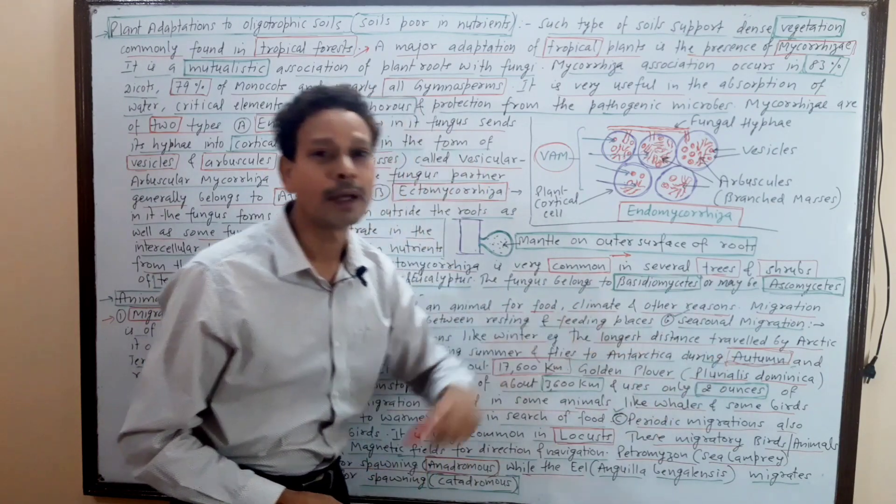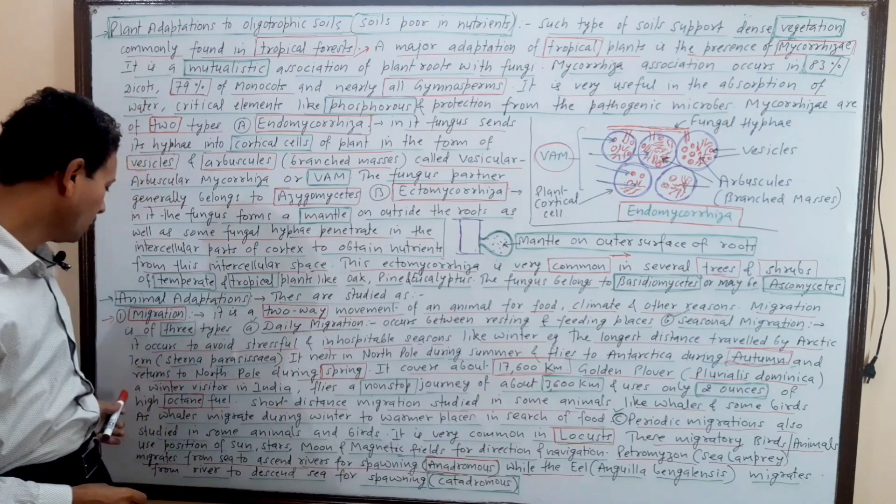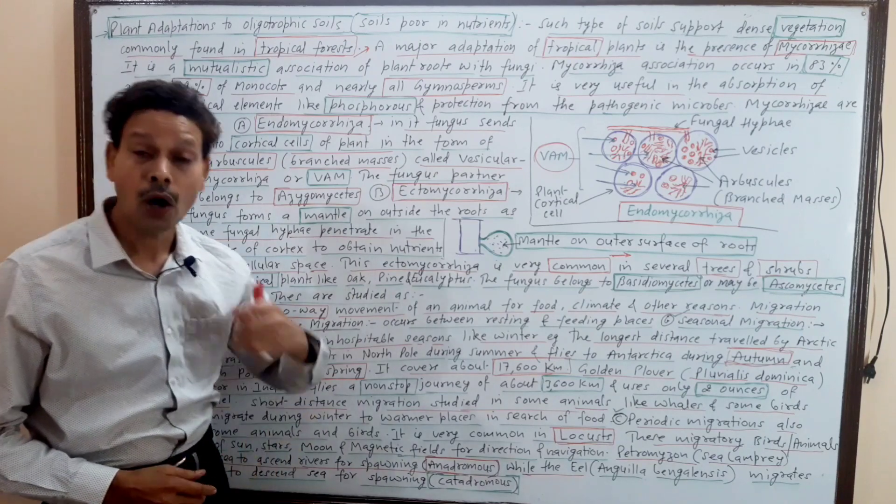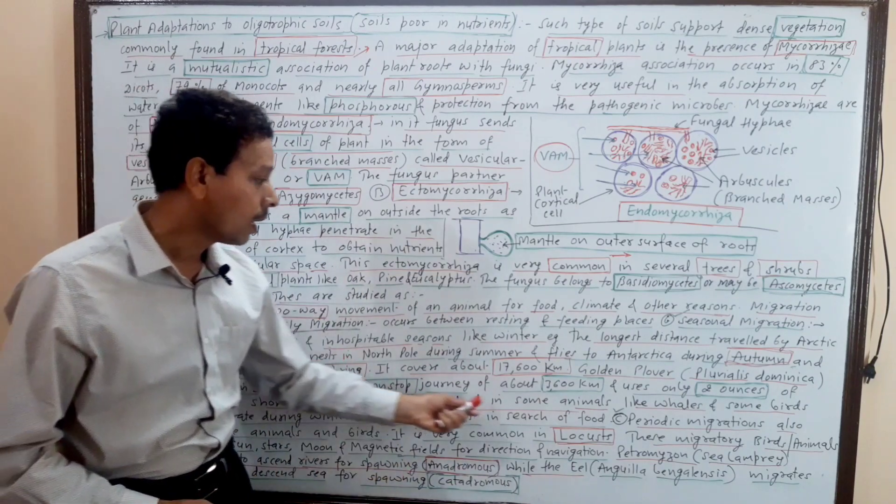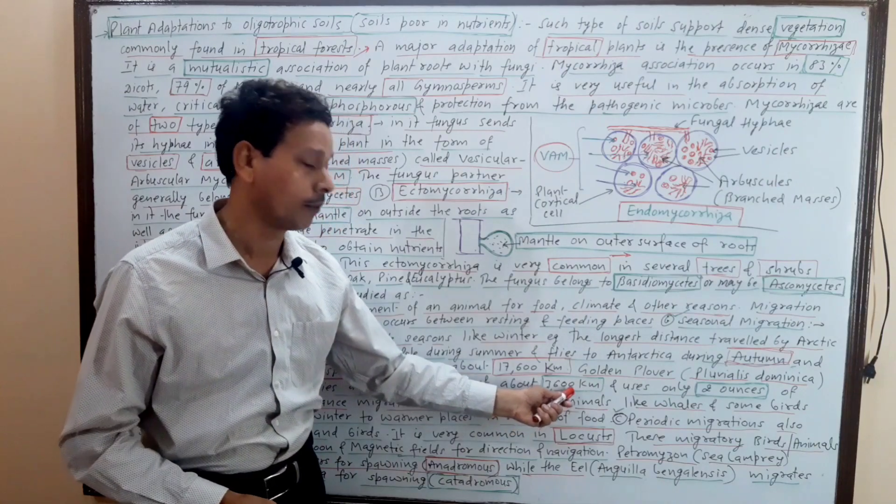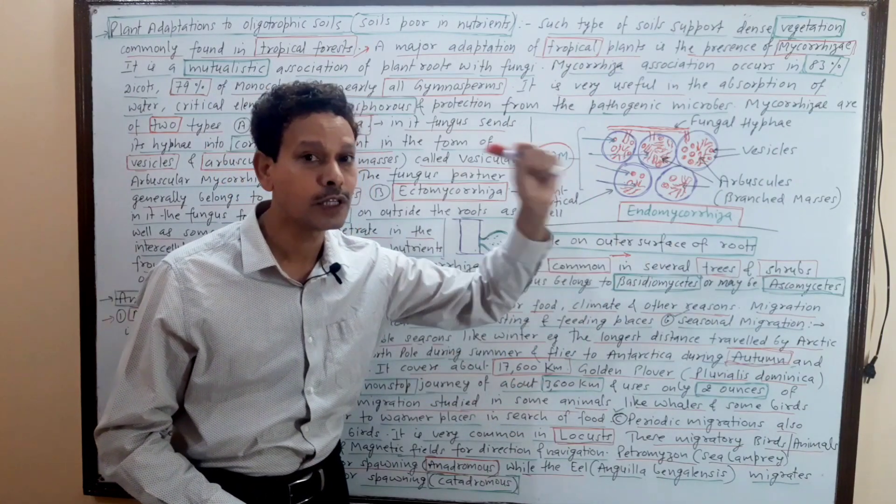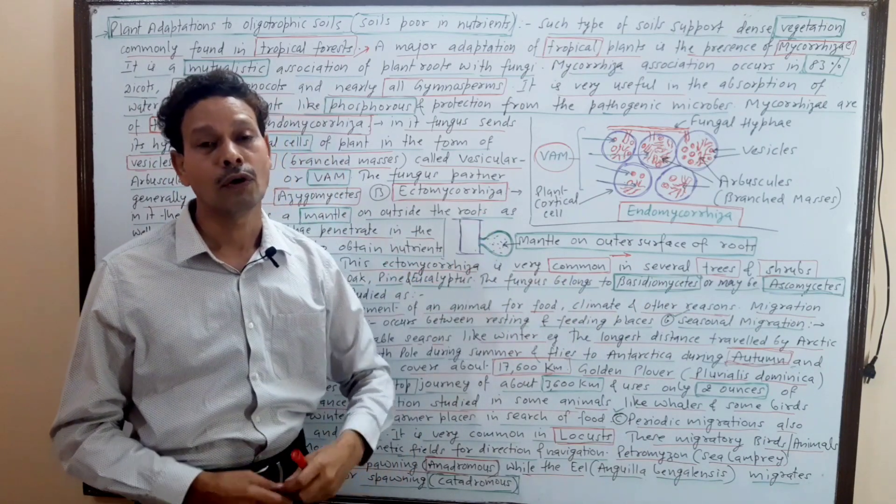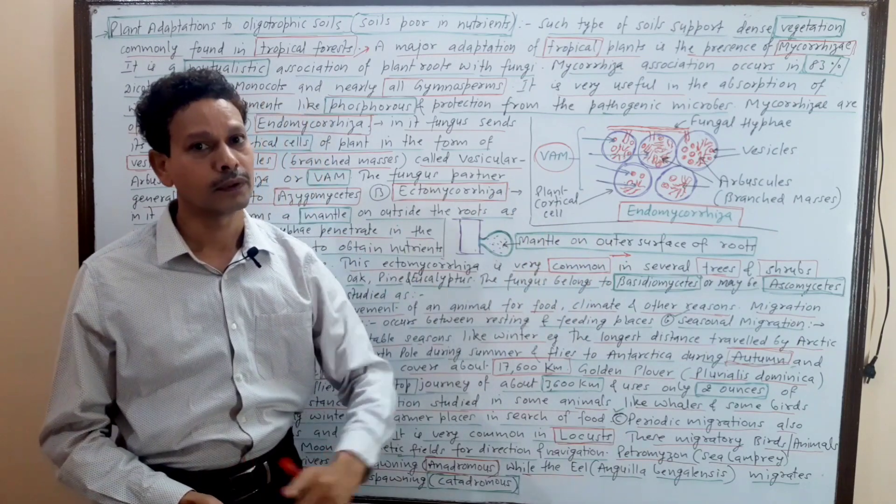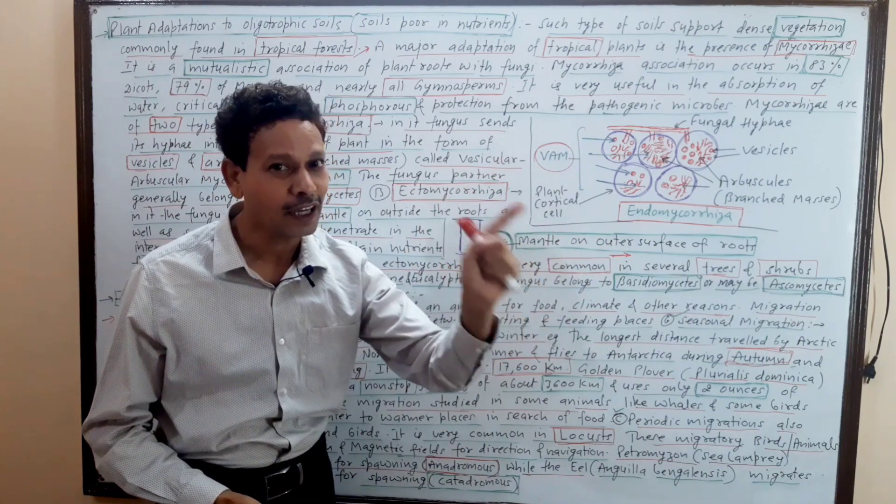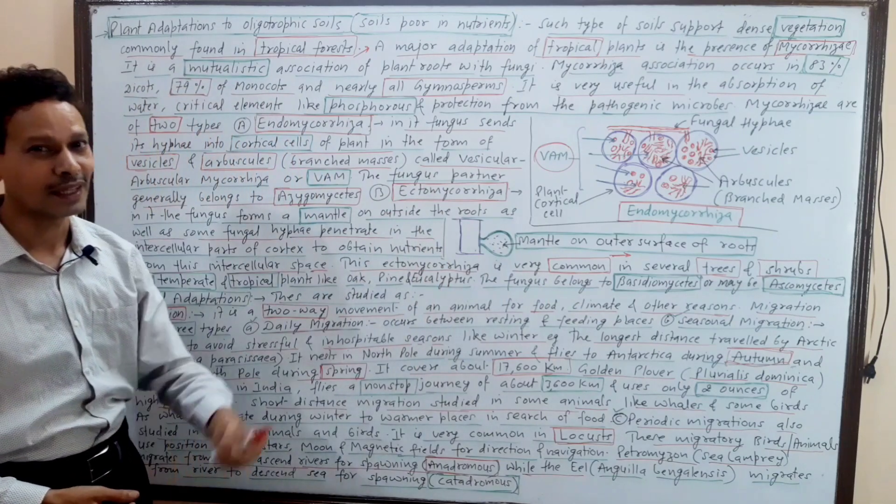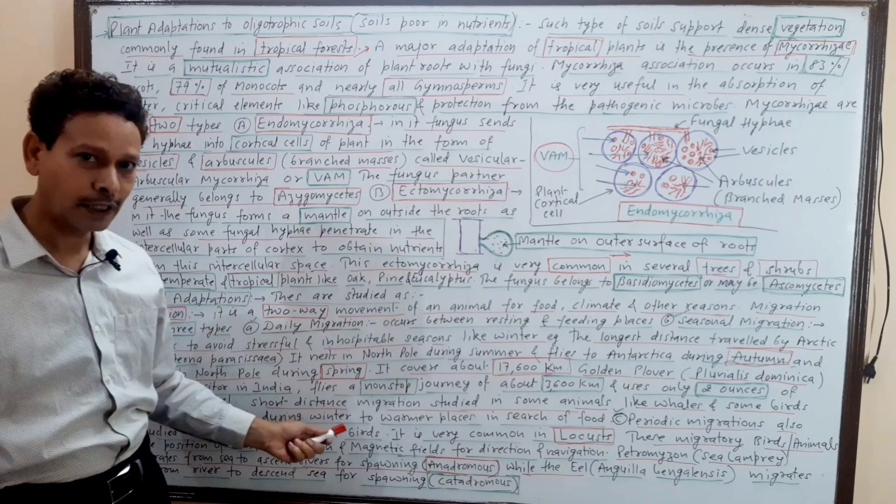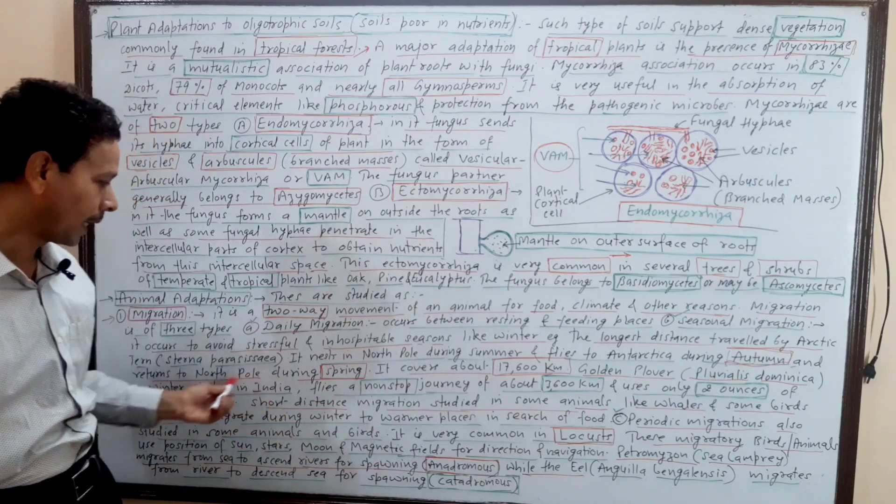Another example, very important - the golden plover, scientific name Pluvialis dominica. It covers a non-stop journey of about 3,600 km, and in this long non-stop journey it uses only 2 ounces of high energy fuel. It is high octane fuel, only 2 ounces.